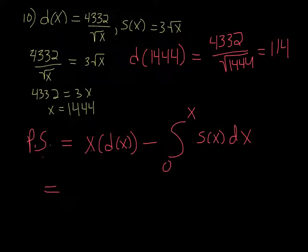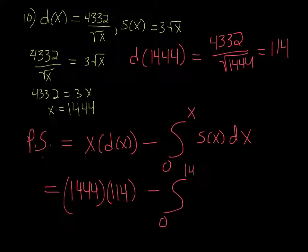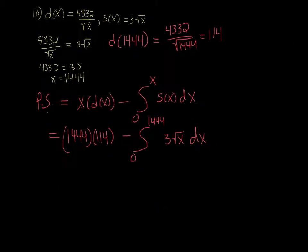So this is going to be 1444 times 114 minus the integral from 0 to 1444 of 3 root x dx. Now, the second part we can do in the calculator because there's no 0 in the denominator, and of course, we can easily multiply the first two numbers together. So we get 164,616.